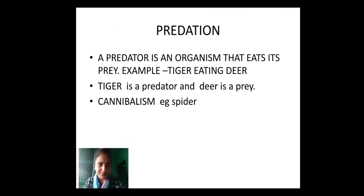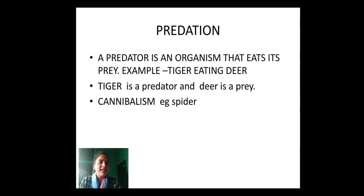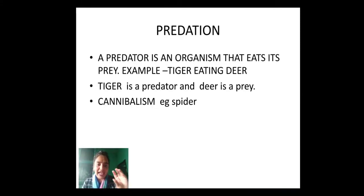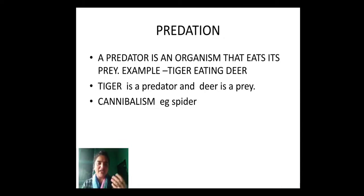Next, we have predation. Predation is a kind of association or relationship between a predator and a prey for food. A predator is an organism that eats its prey. For example, a tiger eating a deer — here, the tiger is the predator and the deer is the prey. Predators are animals or organisms which kill or hunt another organism for food. Prey are the animals or organisms which are being killed or hunted by another organism.